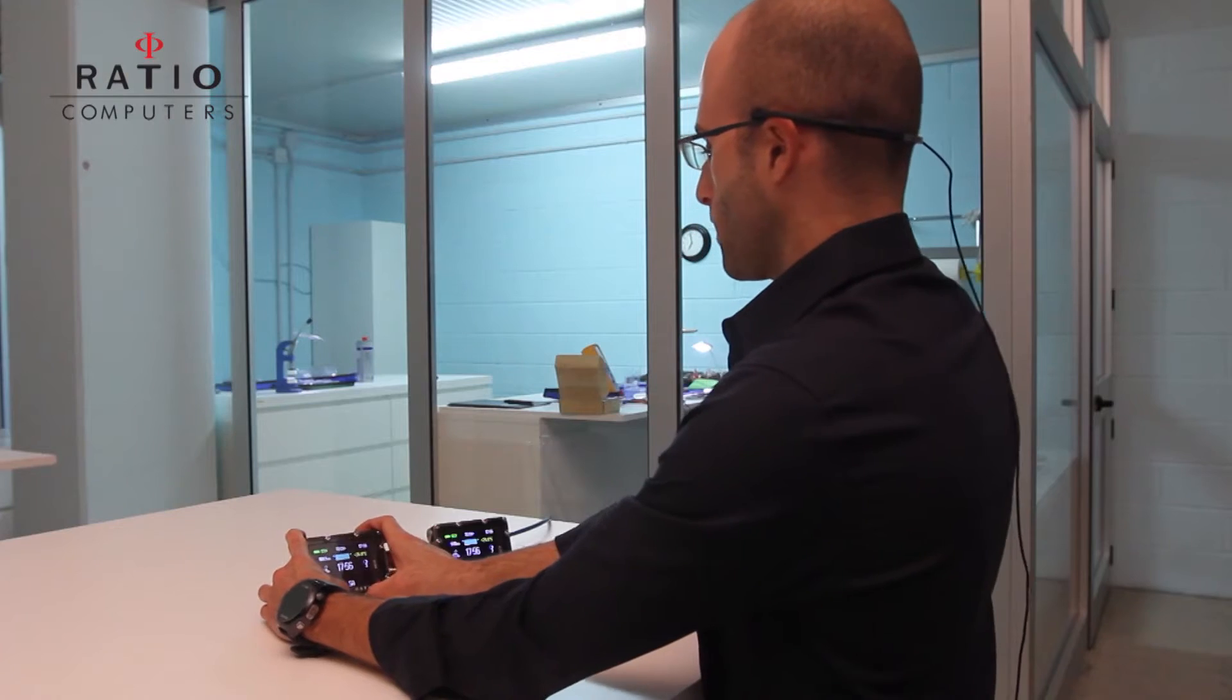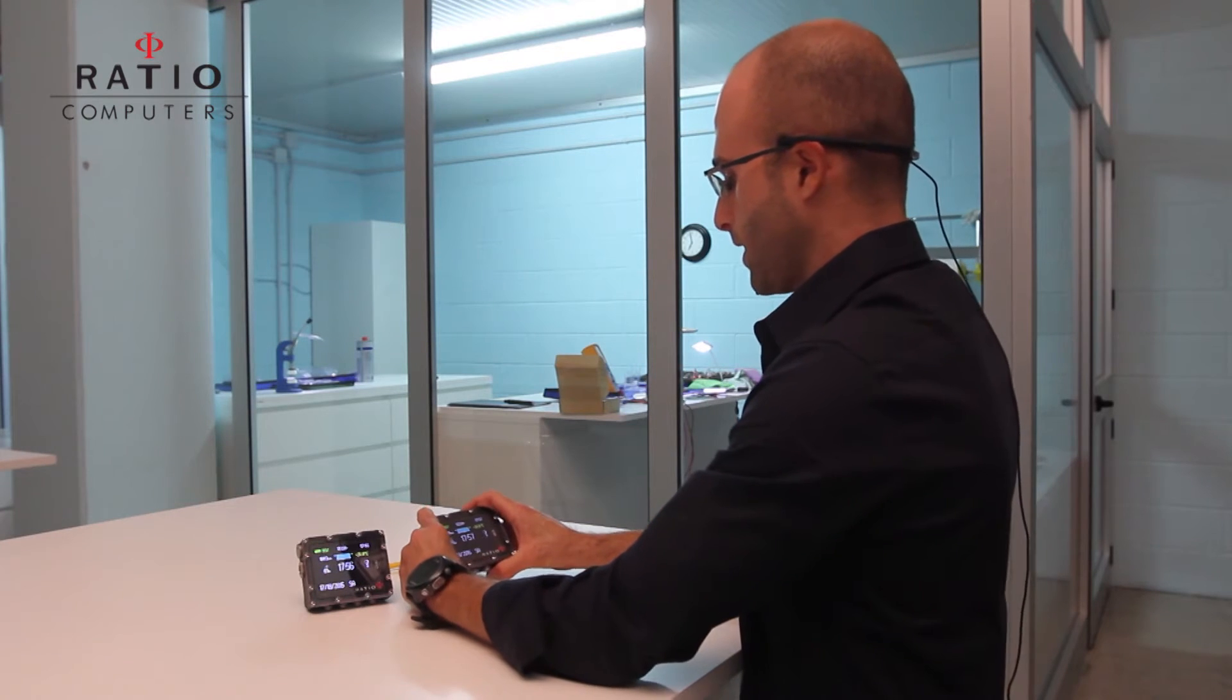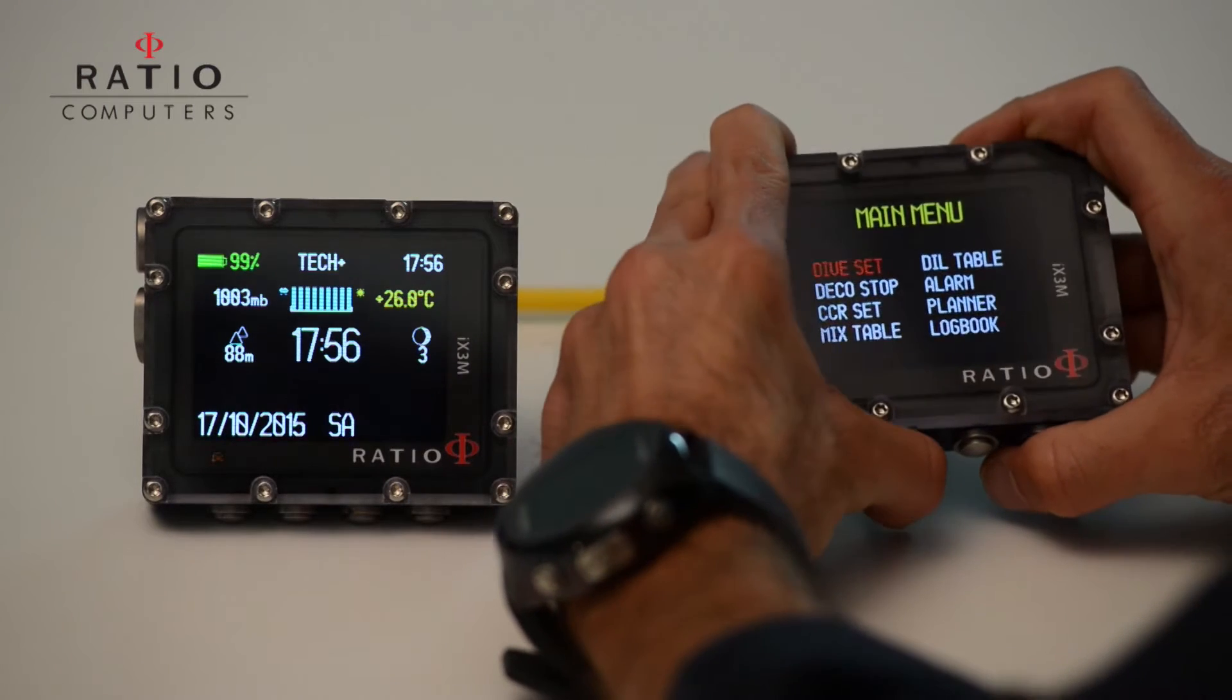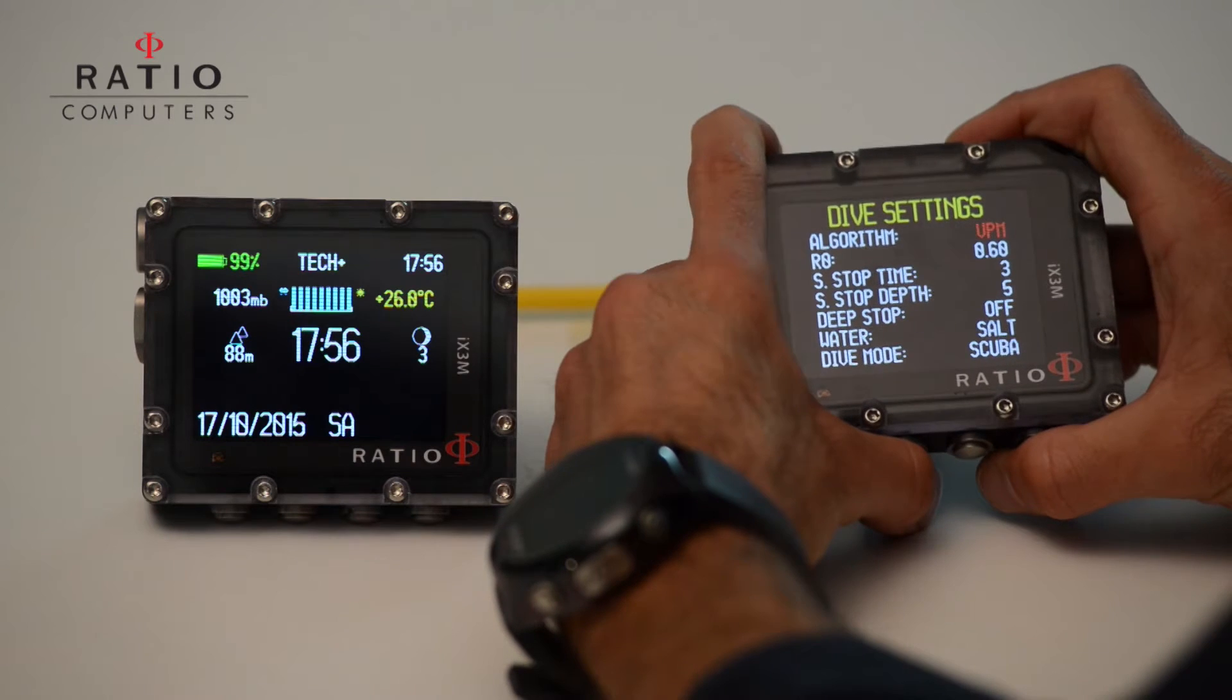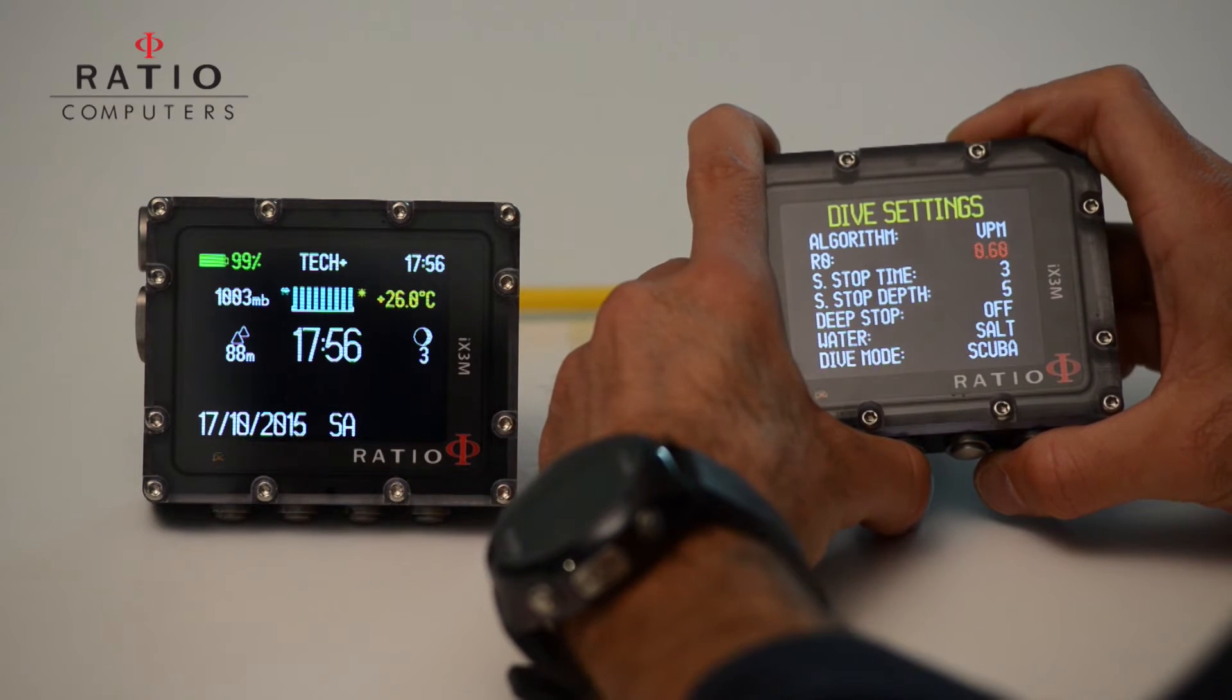On the second computer we will set up VPM with a critical radius of 0.16.